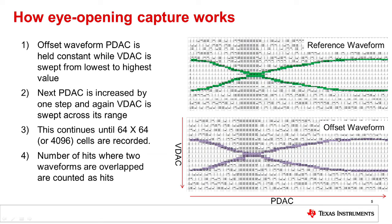Where these two waveforms cross one another, we have eye crossings or eye hits that are recorded on the corresponding cells. For these measurements, PDAC — the horizontal axis — is held constant while VDAC, the vertical axis, is swept from 1 through 64. Once this is done, PDAC is incremented and we go to the next column, sweeping VDAC again from 1 to 64. This continues until we reach PDAC 64 and VDAC 64, completing our 64 by 64 cell matrix where each cell value is used to determine eye crossings.